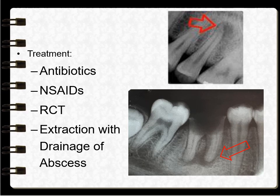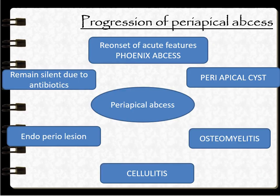Treatment includes antibiotics, root canal treatment for the tooth that can be saved, or extraction for teeth which cannot be saved, along with drainage of the abscess. This periapical abscess can progress into phoenix abscess, periapical cyst, osteomyelitis, cellulitis, or it may cause an endo-perio lesion, or it may remain silent due to antibiotics.